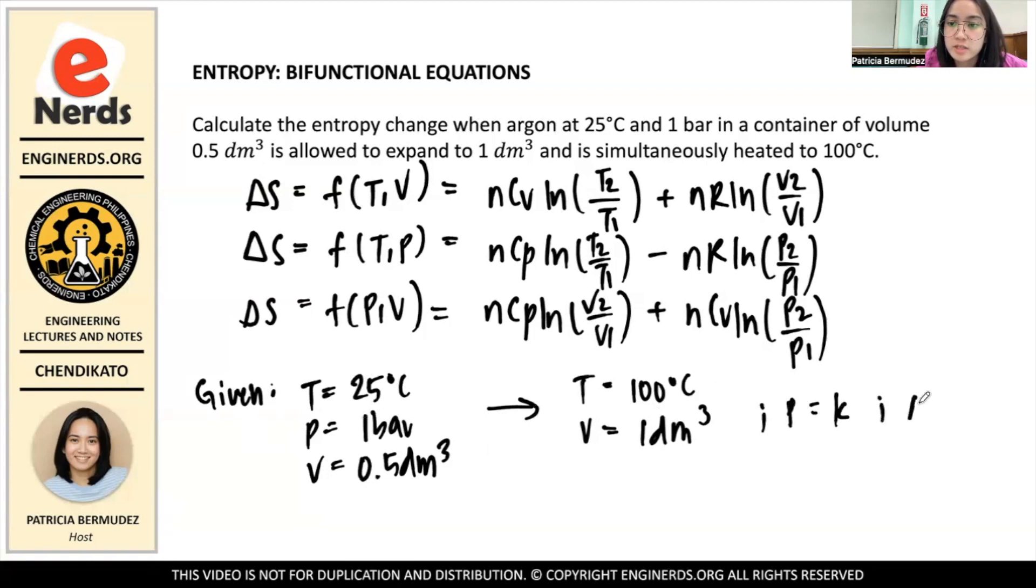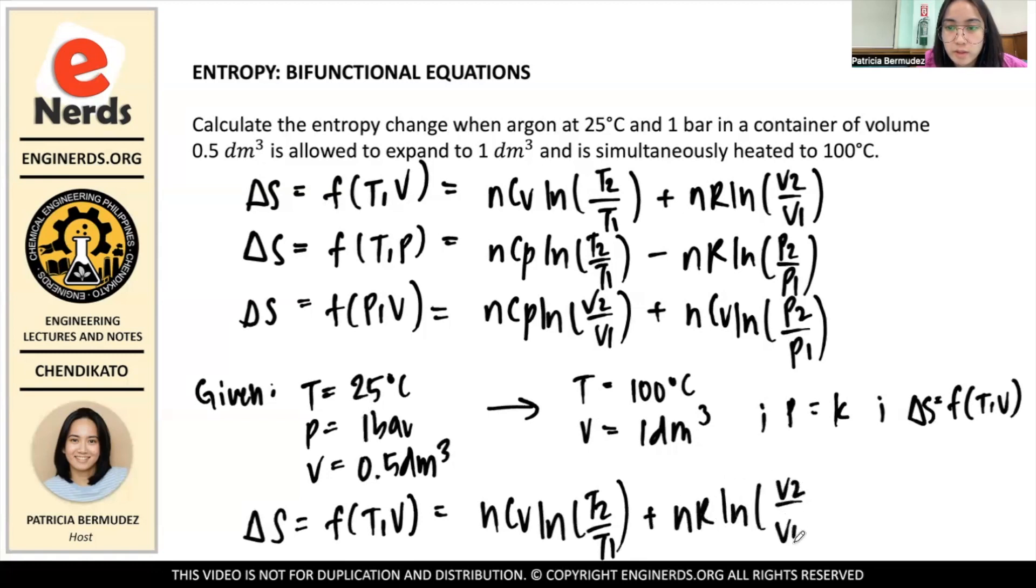And our equation for that, change in S as a function of T and V, is N·Cv·ln(T2/T1) plus N·R·ln(V2/V1).